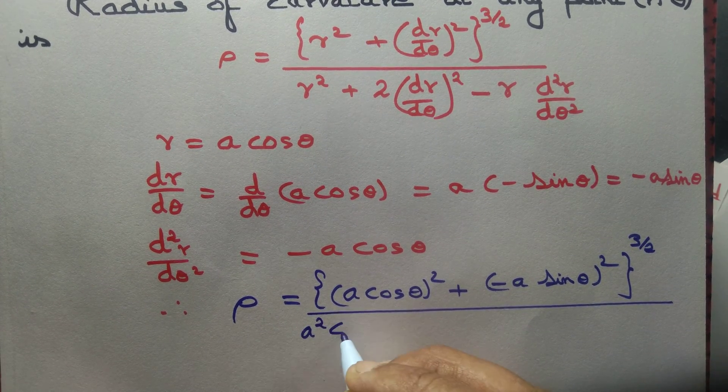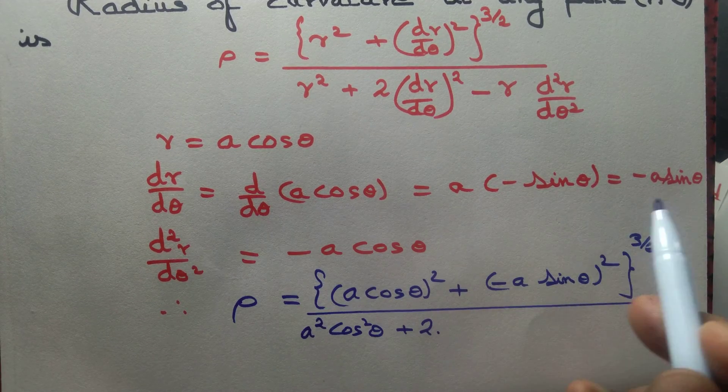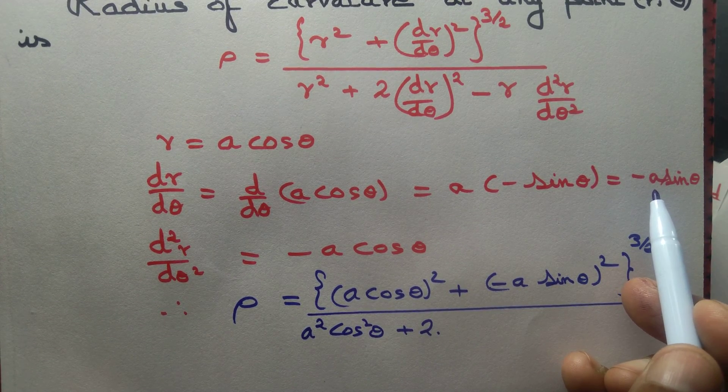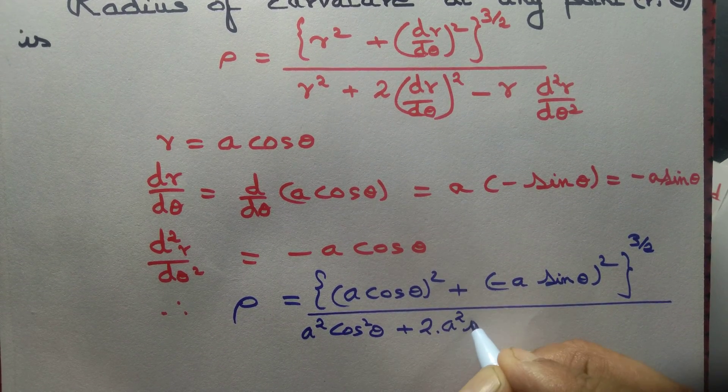So that can be written as a² cos² theta plus 2 times dr by d theta whole thing square. Minus minus is plus, so a² sin² theta.